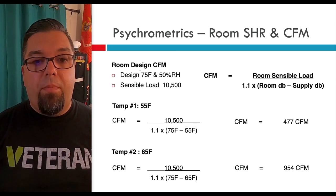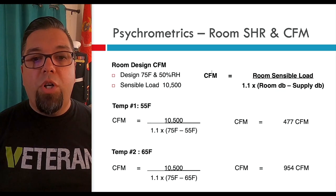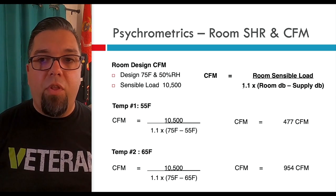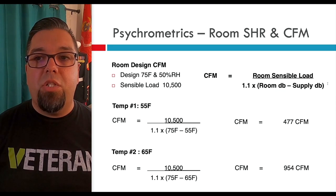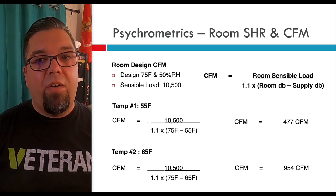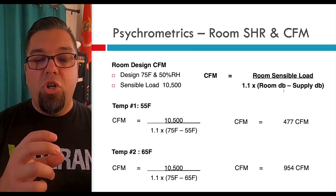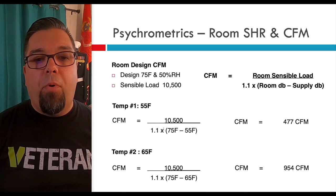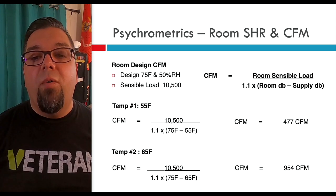I'm going to show you the math for what you'd need if your supply temperature was 65 degrees. Design temperature is up top, and the sensible load for the space is 10,500 BTUs per hour from our load calculation. We use this standard equation: CFM equals your room sensible load divided by a constant of 1.1 times the room dry bulb minus your supply dry bulb. Your room dry bulb is the design temperature — 75 degrees — minus your supply dry bulb coming off the sensible heat ratio line. So: 10,500 divided by 1.1 times (75 minus 55).